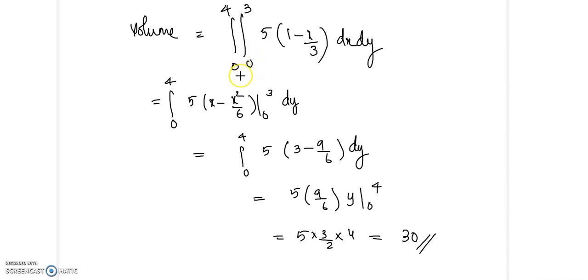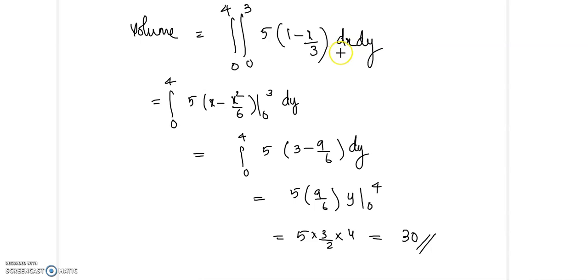Volume will be given by the integral from 0 to 4, integral from 0 to 3, of 5 times (1 minus x/3) dx dy.